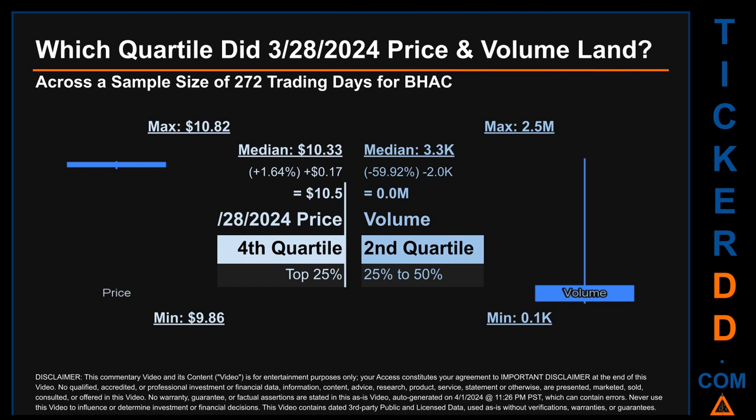Quartiles tell us about the spread of a dataset by breaking it into quarters, just like how the median breaks the set in half. Descriptively, BHAC has a median price of 10.33. Therefore, March 28th, 2024's price was higher than that middle marker by 1.64 percent. The day's volume of zero million was less than the median by 59.92 percent.